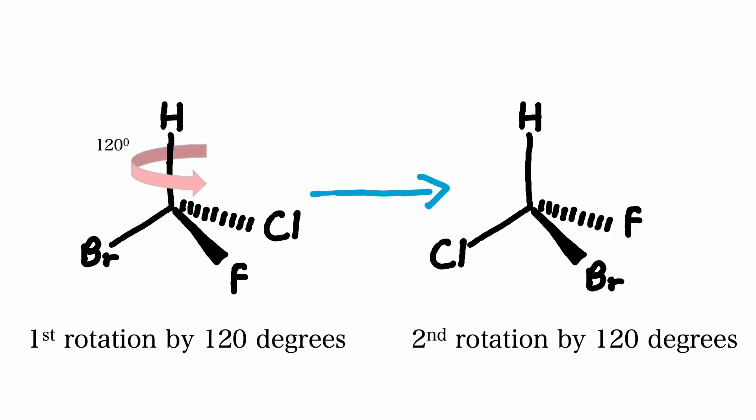If we were to rotate it again by 120 degrees, we see that fluorine moves into the page, bromine comes out of the page, and chlorine is on the plane of the page.